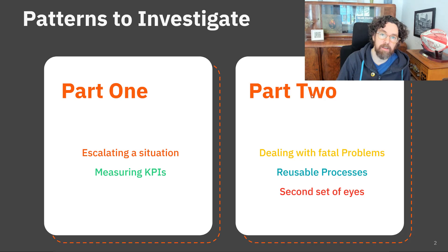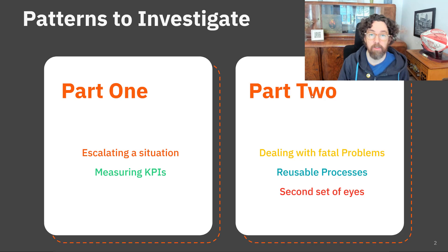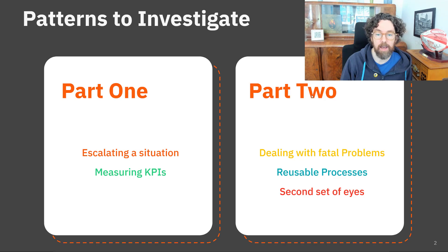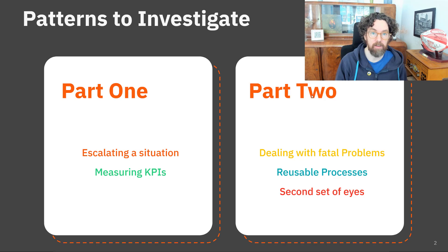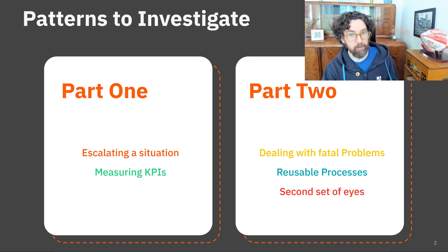Today we're going to talk about three more patterns. First, dealing with fatal problems — your process has a happy path, but if it does not go that way you need to have prepared some eventuality. We'll also talk about reusable processes and sub-processes, best practices around them, and finally the four-eyes principle where other people validate data or objects within your process.